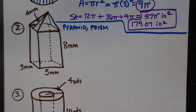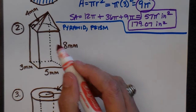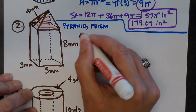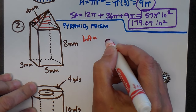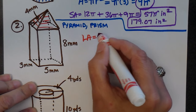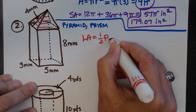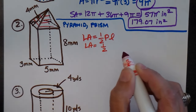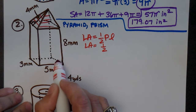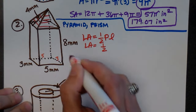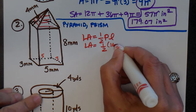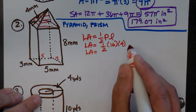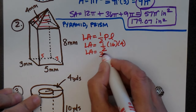Looking at the pyramid — can you see the base? No. So we're going to do the lateral area of the pyramid. The formula is one-half the perimeter of the base times the slant height. The perimeter is 3 plus 5 plus 3 plus 5, which is 16, and the slant height is 4. So lateral area equals one-half times 16 times 4, which is 64 divided by 2, giving us 32.